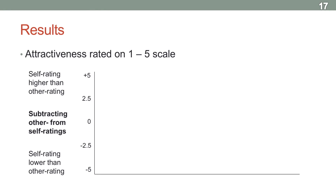To plot this out, you could put down a scale from plus 5 to negative 5, if each attractiveness rating is rated on a 5-point scale, where you're subtracting other people's ratings from your self-rating. So if you gave yourself a 5 but everyone else gave you a 1, you'd have a positive number. But if you rated yourself a 1 and everyone else rated you a 5, you'd end up with a negative number.